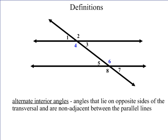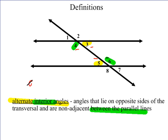Alternate interior angles are angles that lie on opposite sides of the transversal and are non-adjacent between the parallel lines. The word interior means between the parallel lines. Looking between the parallel lines, there are four angles: three, four, five, and six. Since angle four is on one side, its alternate is angle six on the other side. The other pair is angles three and five. So we have two sets of alternate interior angles, and these are also congruent — meaning they are equal and have equal measure.